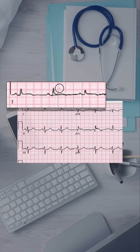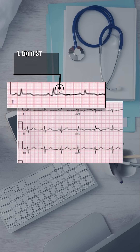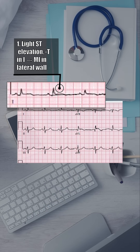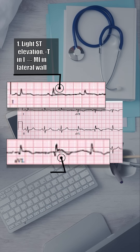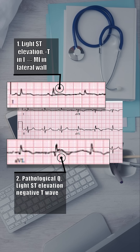Now let's look at his ECG. There is slight ST elevation and negative T waves in lead I. In AVL, there is a pathological Q wave with the same ST changes, suggesting lateral wall myocardial infarction.